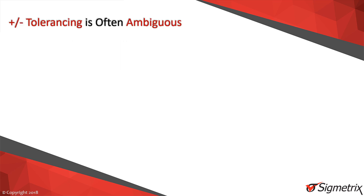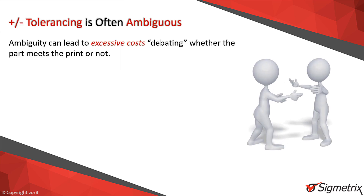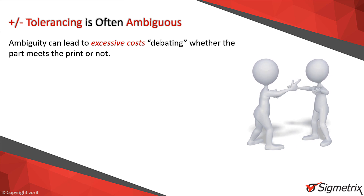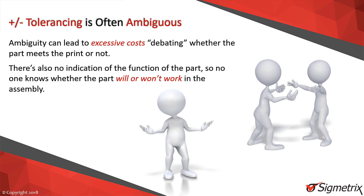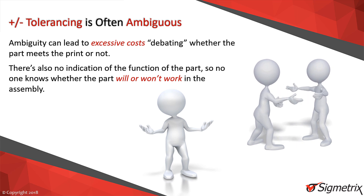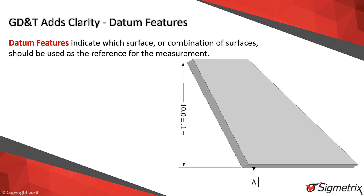Can you understand how people might waste time debating whether or not this part is acceptable? Not only may working parts be rejected, but the same ambiguity may also result in parts that meet the drawing but not function in the assembly. Both scenarios reduce the company's profitability. GD&T offers a powerful solution to avoid this problem.